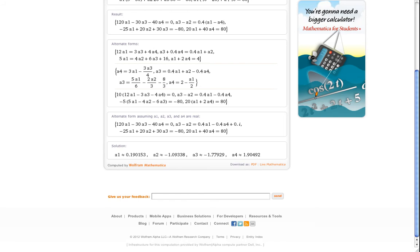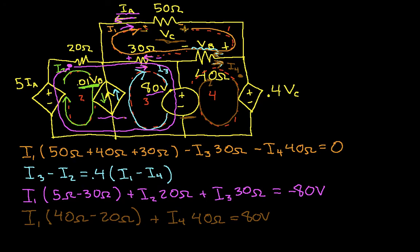So we go back to our circuit, and we can say then that I1, according to our computations, is 0.190 amps.